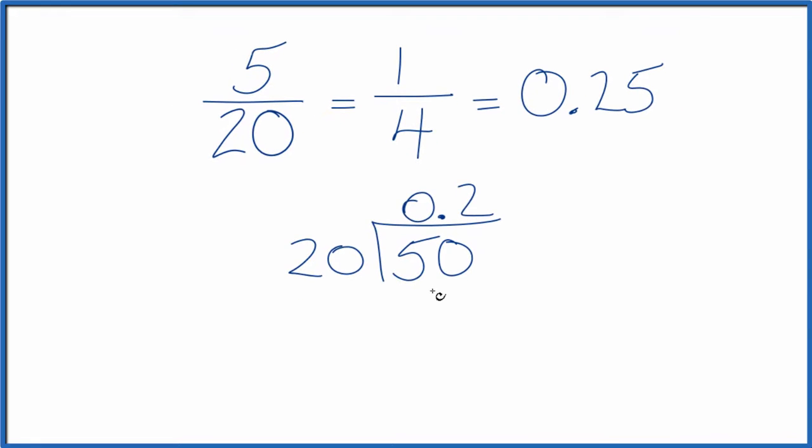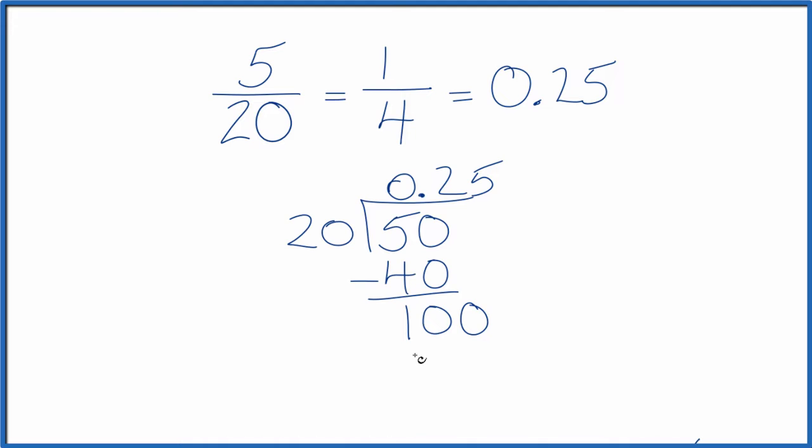2 times 20, that's 40. Subtract gives us 10, so we'll call it 100. Move over another decimal place. 5 times 20, that's 100. No remainder.